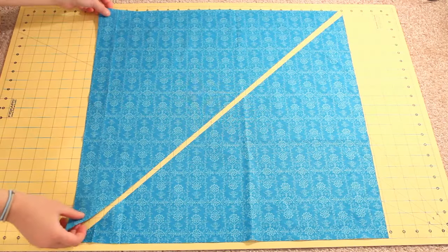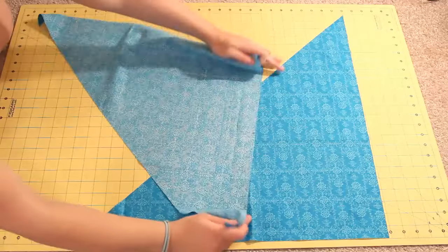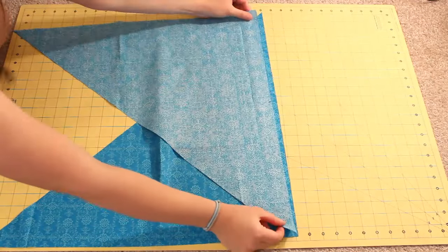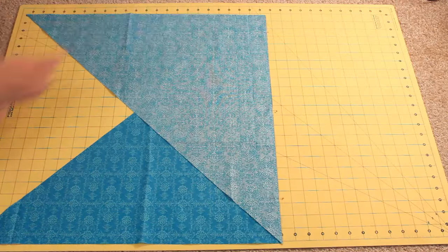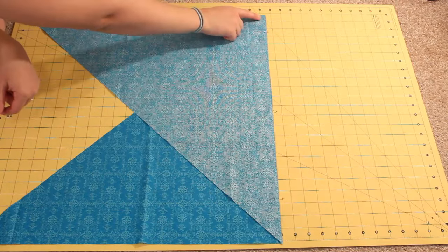Then line up the far left edge with the far right side right sides together. Pin the two layers together and sew with a quarter inch seam allowance.